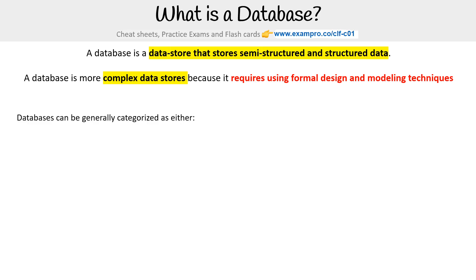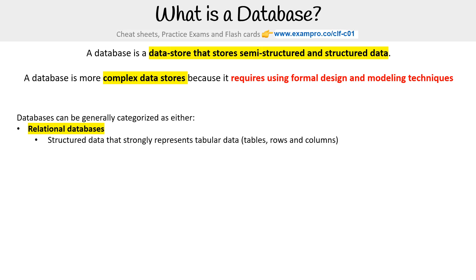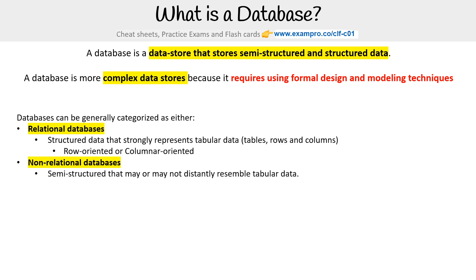Databases can generally be categorized as either being relational — structured data that strongly represents tabular data, so we're talking about tables, rows, and columns. There's a concept of row-oriented or column-oriented. And then we have non-relational databases, which are semi-structured and may or may not distinctly resemble tabular data.